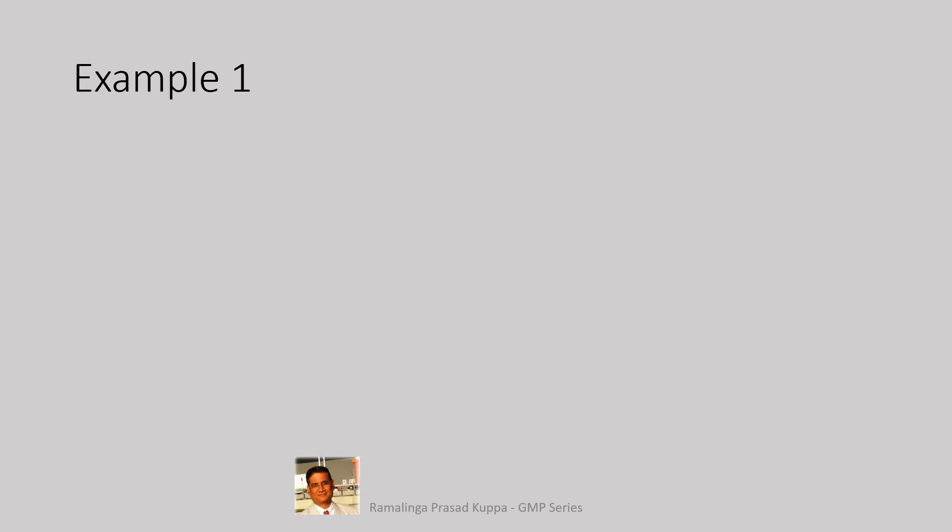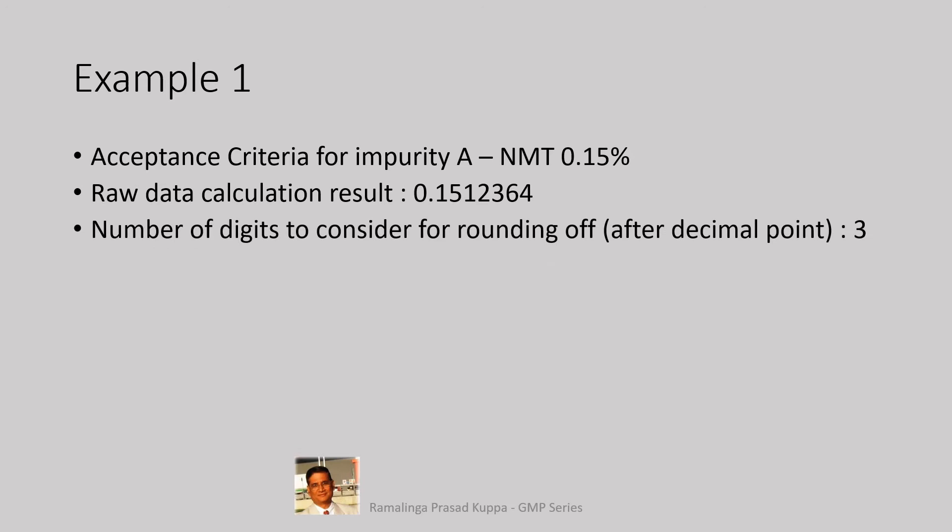Let us see some examples. In this example 1, the impurity A has to be within 0.15%. Raw data calculation result is 0.1512364. After calculating as per the formula given in the monograph, the result is 0.1512364 as shown on the calculator. Number of digits to consider for rounding off after the decimal point is 3. As described in slide 4, we have to consider 3 digits after the decimal point. So, the original data is 0.1512364.